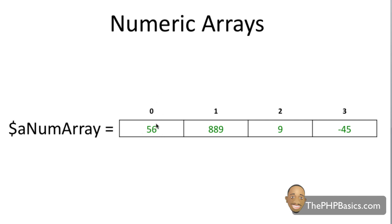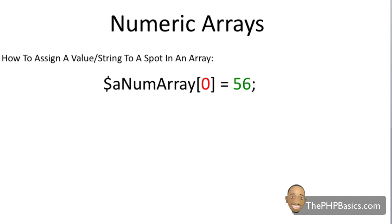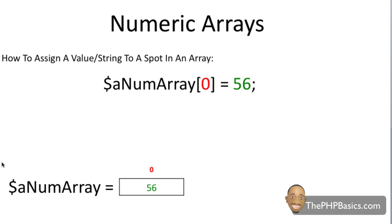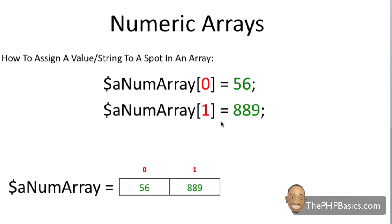At index zero we have the number 56, at index one we have the value 889, index two we have nine, and so on. For a quick example on how to assign a value or string to a spot in our array, we have a dollar sign and then the name of the array, similar to how we would create a variable. Next we have an open square bracket, then the index we want to assign the number or string to, then we close the square bracket and assign the value. For index zero we have the value 56, and for index one we assign 889.